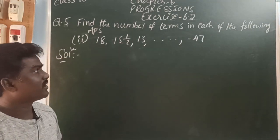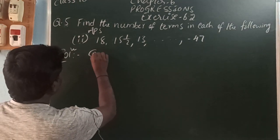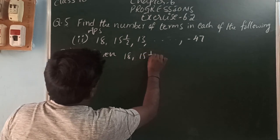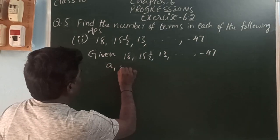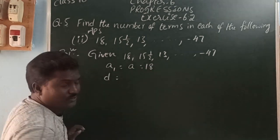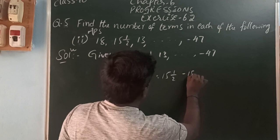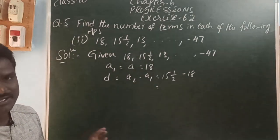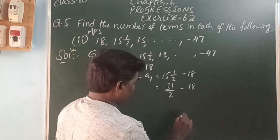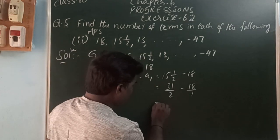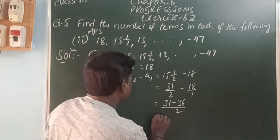Next, find the number of terms in each of the following APs: 18, 15 and a half, 13 and so on minus 47. So here the given AP is 18, 15½, 13 and so on minus 47. The first term A is 18. The common difference D is A2 minus A1: 15½ minus 18. Now 15½ is a mixed fraction — converting to improper fraction gives 31 by 2. So D is 31 by 2 minus 18, which equals 31 by 2 minus 36 by 2, giving minus 5 by 2.